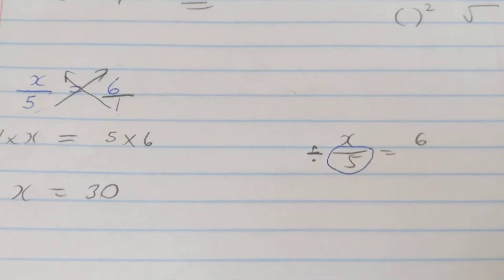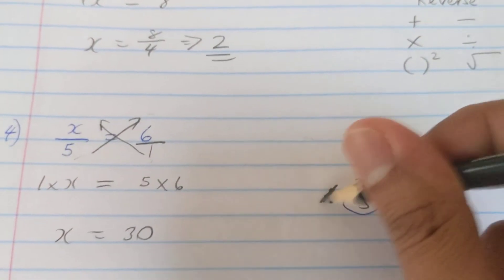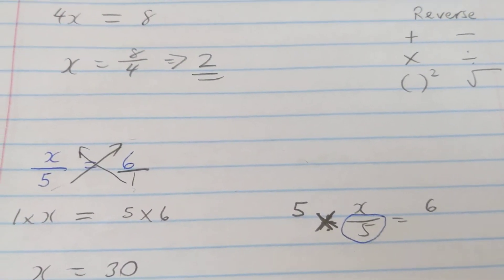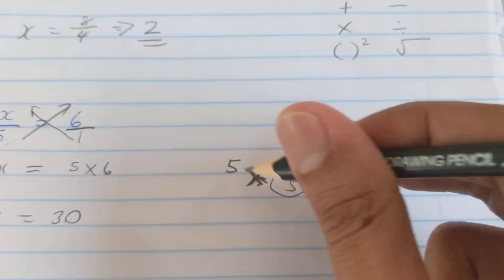What's the reverse of dividing by 5? The reverse of divide is multiply. So instead of dividing by 5, I'm gonna multiply by 5. So when I multiply by 5, you realize this is going to cancel off.